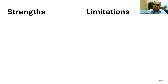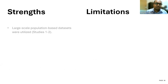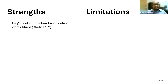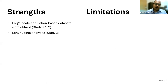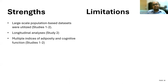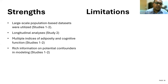Now I'd like to show you some strengths and limitations of our analysis. For strengths, we used large-scale population-based datasets in both Study One and Two, unlike many previous studies which are small-scale and not sufficiently powered to detect small to medium-sized effects. Our Study Two is a longitudinal analysis, so we can comment on directionality — what is the effect of baseline cognitive function on follow-up adiposity and vice versa. We used multiple indices of adiposity and cognitive function, so the association is not limited to any specific measure. We also had rich information on potential confounders, particularly comorbidity, for which we created comorbidity indices and adjusted our analysis accordingly.